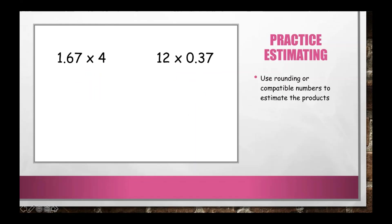Let's practice two more problems: 1.67 × 4 and 12 × 0.37. Looking at the first one, the digit in the greatest place value that is non-zero is 1. We look at the 6 to its right — since 6 is in the 5–9 range, we round up: 1.67 becomes 2. Then 2 × 4 is easy to calculate, and our answer is 8.